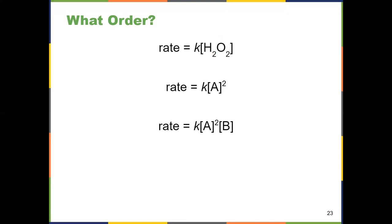I recommend you pause the video and describe what each example means. Remember: if no superscript is shown, it's one — just like a coefficient in a reaction, ones are implied but not shown. So the first example is first order with respect to hydrogen peroxide and first order overall. The second is second order with respect to A, second order overall. The third is second order with respect to A, first order with respect to B, and third order overall (two plus one is three). Again, those superscripts have to be determined experimentally.